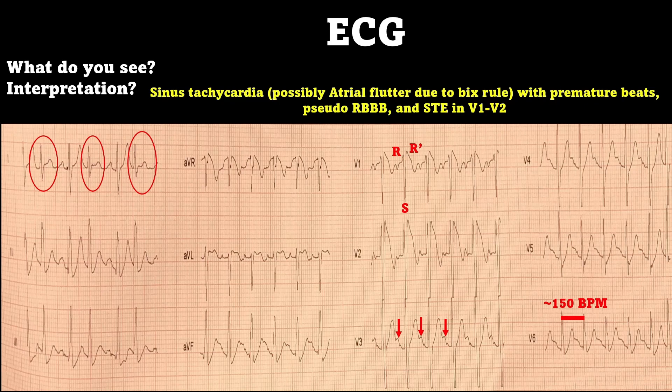Looking throughout this, I see some ST depression in some of your inferior leads and in V5 and V6. There's also ST elevation in V1 and V2, and a little bit in AVL. I believe the ST depression is rate-related ischemia because the patient's heart rate is going so fast. The ST elevation in V1 and V2 — giving you that pseudo right bundle branch block — has somewhat of a coved appearance. So this is a sinus tachycardia, possibly atrial flutter with premature beats, a pseudo right bundle branch block, and ST elevation in V1 through V2.